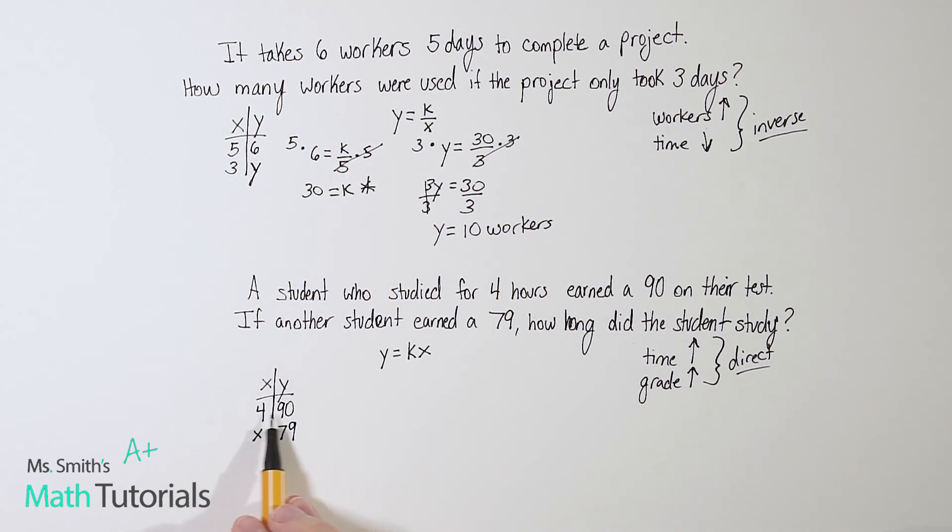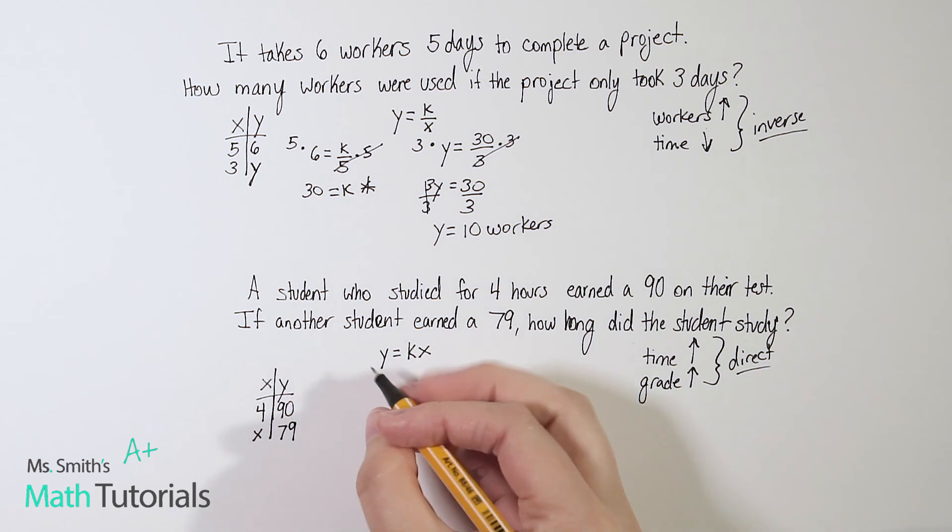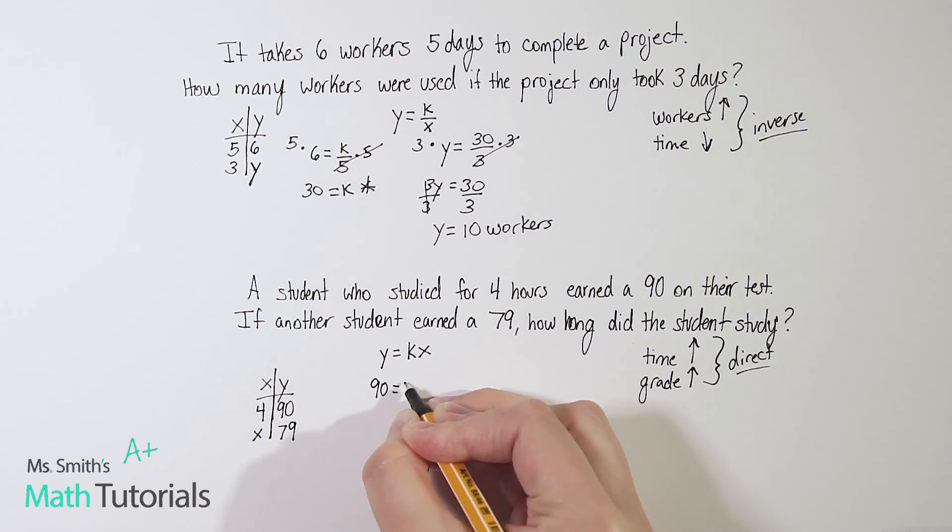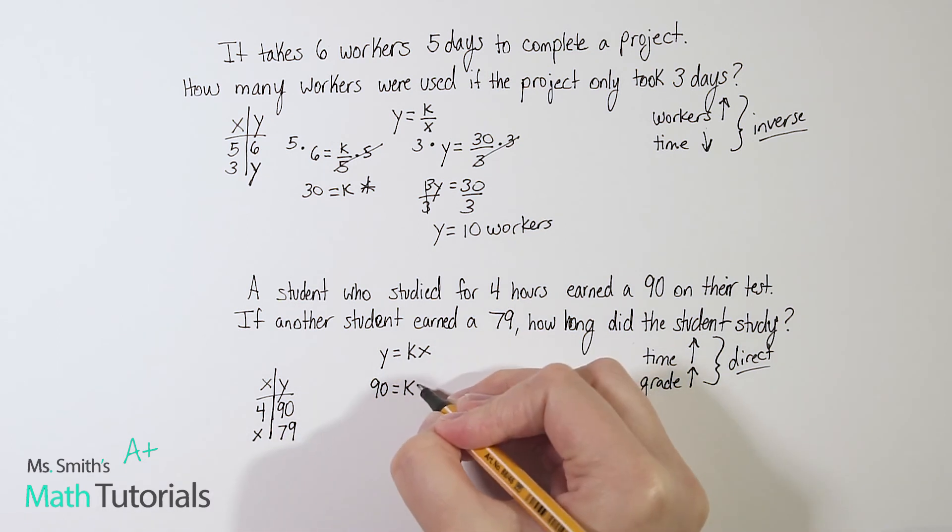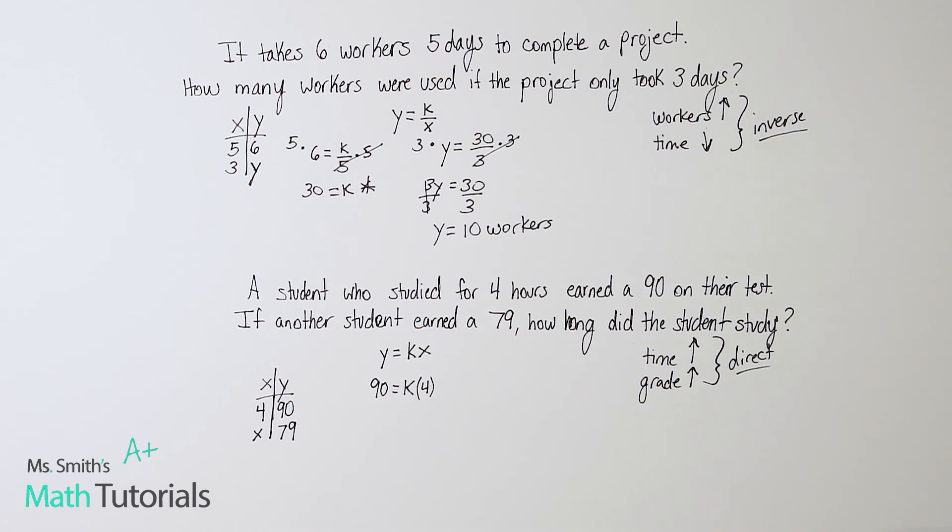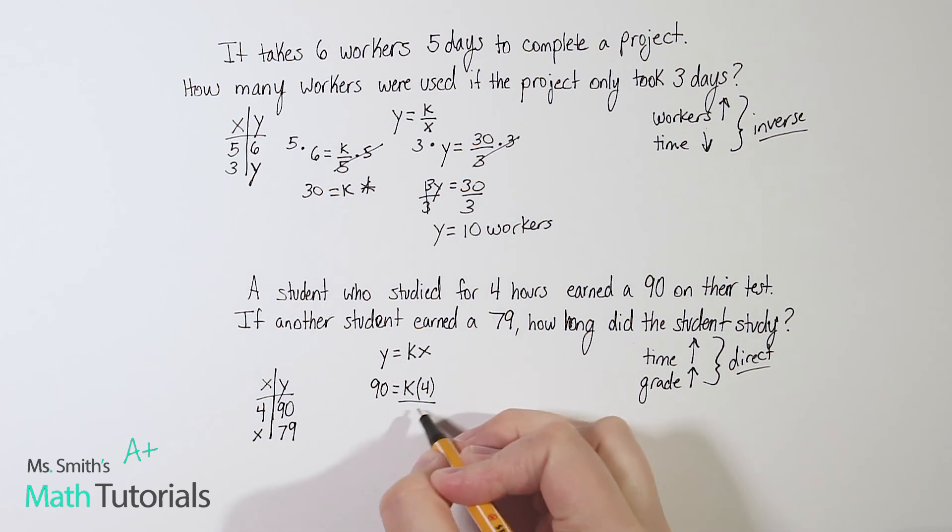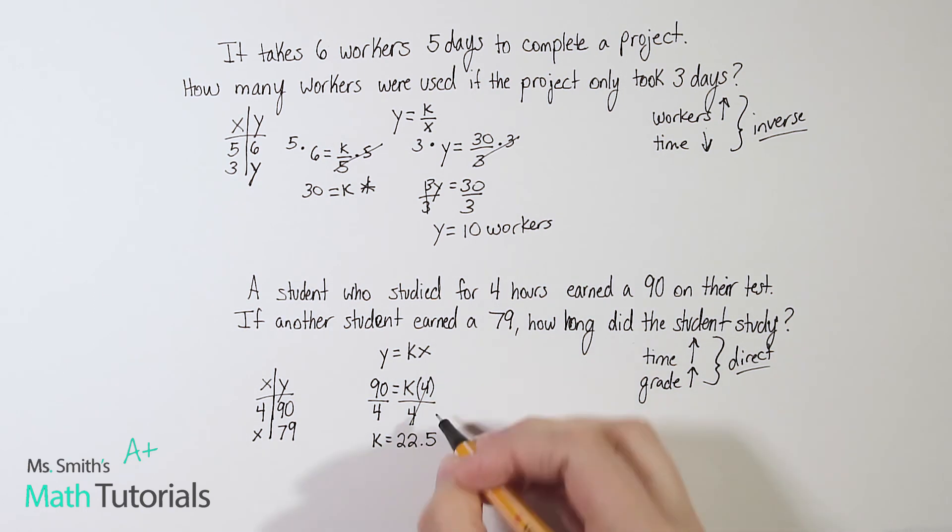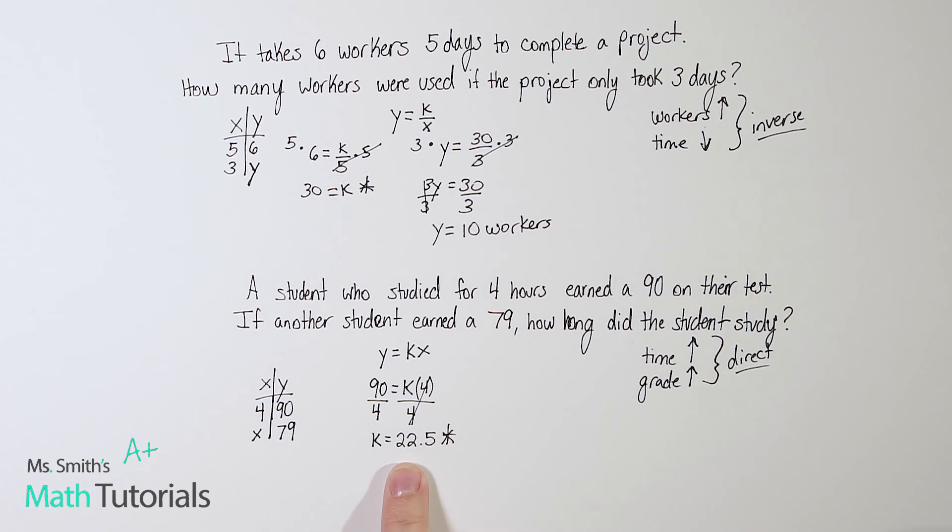All right, so let's use this first one to figure out what k is. So y was 90. We're looking for k. x is four. So k, you could put times four, you could put four k, it doesn't matter. Okay, so I need to undo this multiplication. And to undo multiplication, we divide. All right, what I do to one side, I have to do to the other. 90 divided by four is going to give me 22.5 as k. So I always star it. So remember, that's my important information moving forward.